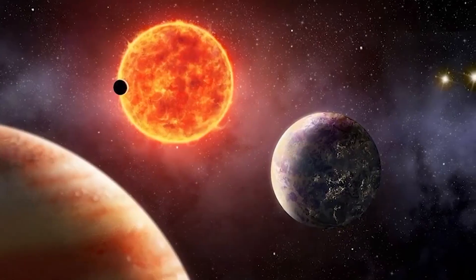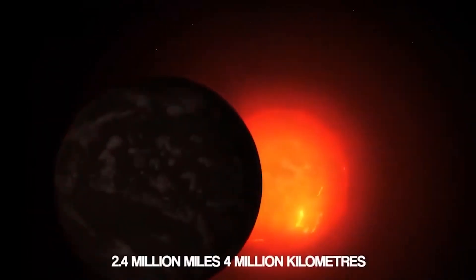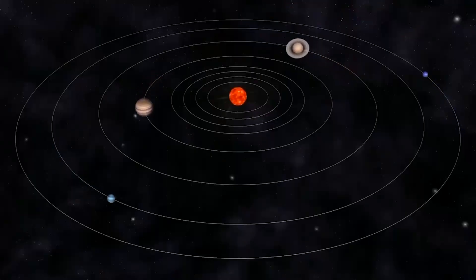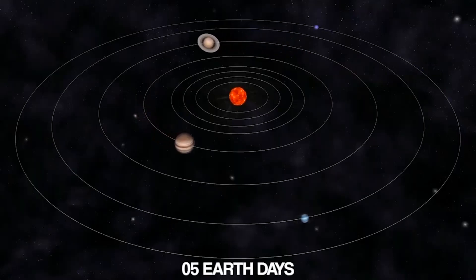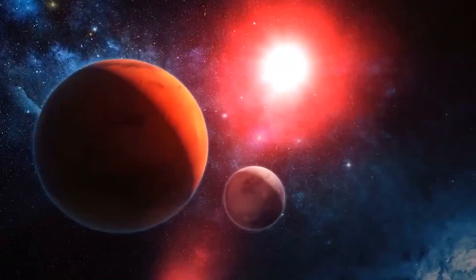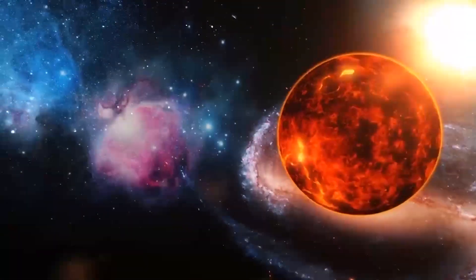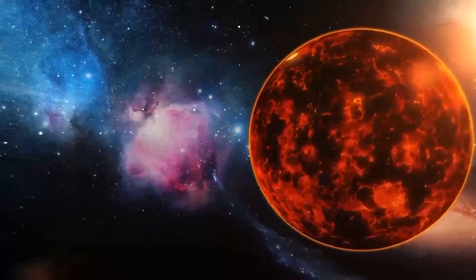It orbits its Sun, Proxima Centauri, from 2.4 million miles, or 4 million kilometers, and completes an orbit in just five Earth days. According to the experts, low-mass planets, such as Proxima d, are expected to be the most abundant in our galaxy and could potentially host life.